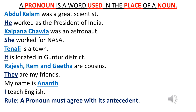'Tenali is a town. It is located in Guntur district.' Here the pronoun is 'it', used as a substitute for Tenali. 'Rajesh, Ram, and Gita are cousins. They are my friends.' Here, instead of Rajesh, Ram, and Gita, we use the word 'they' — it is the pronoun. 'My name is Anand. I teach English.' Here, Anand is the noun and 'I' is the substitute pronoun.